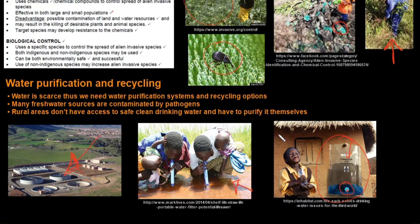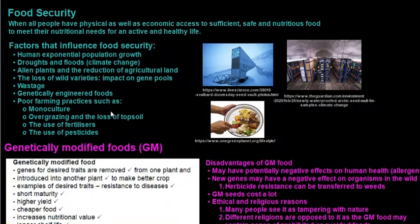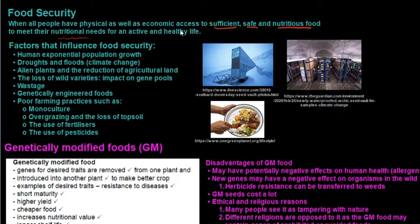Food security is when all people have physical as well as economic access to sufficient, safe, nutritious food to meet their nutritional needs for an active and healthy life. Unfortunately this is not the case across the world. Factors that influence food security include human exponential population growth — we cannot keep up with food demand for all people on Earth.